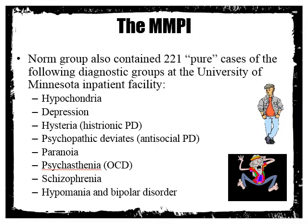These patients had pure cases of the following problems: hypochondria, depression, hysteria (now called histrionic personality disorder), psychopathic deviance (now antisocial personality disorder), paranoia, psychasthenia (now OCD), schizophrenia, and hypomania/bipolar disorder. Researchers gathered groups with these different psychopathological variables and compared their responses to question items against the Minnesota Normals.